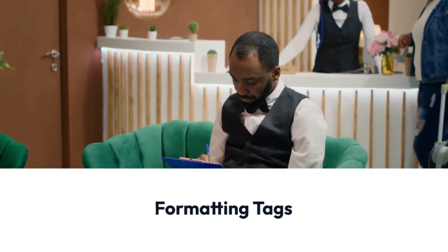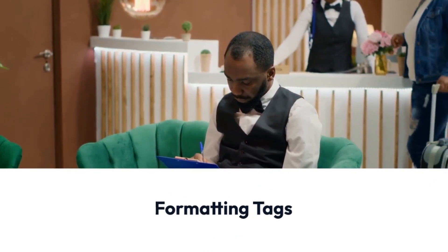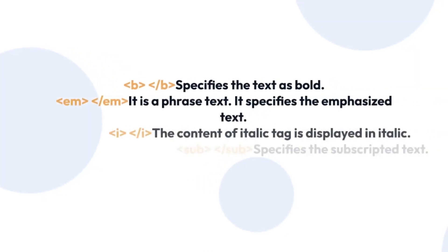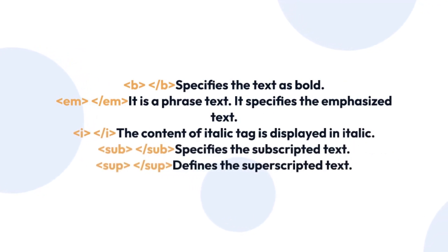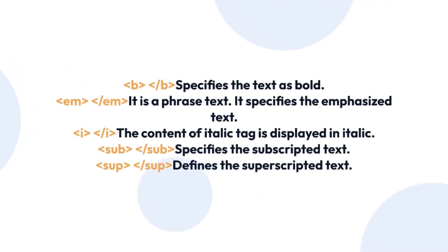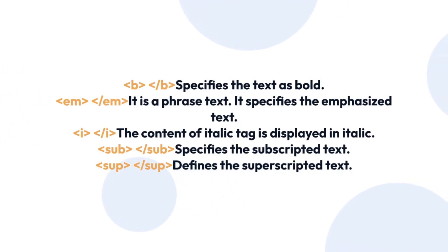Formatting tags. The B tag specifies the text as bold. The EM tag specifies emphasized text. The I tag displays content in italic. The Sub tag specifies subscripted text, and the Sup tag defines superscripted text.